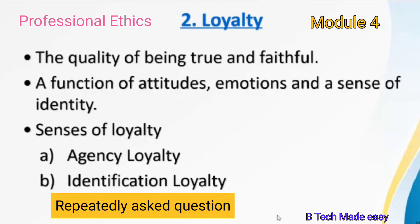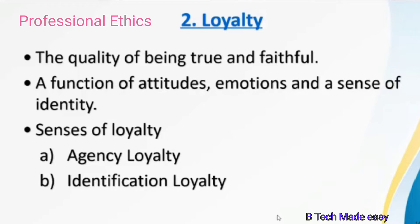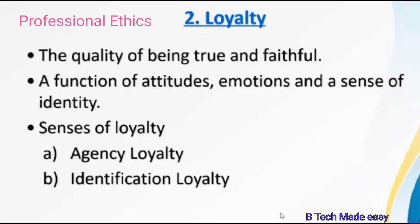The second most important characteristic, or responsibility that we as engineers should have, is called loyalty. Loyalty means the quality of being true and faithful. It is connected to two words: be true and be faithful. The attitudes, emotions, and sense of identity define how truthful and faithful I am to the profession I am doing today. This responsibility called loyalty is of two types: agency loyalty and identification loyalty.